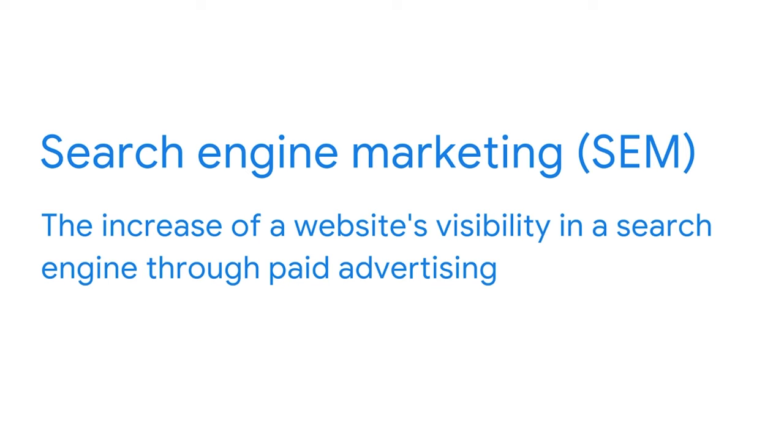You learned about search engine marketing in a previous course, but let's talk about its relationship to your email marketing campaign. SEM is the increase of a website's visibility in a search engine through paid advertising. If you are using Google to search for something, you will see some paid text ads above the organic results — this is an example of search engine marketing. One way to build your list using SEM is to include a discount or incentive in plain text in your ad, enticing those who subscribe immediately. Another way is to use SEM specifically for email marketing lead generation, where a customer browsing sees an ad with a form they can fill out right then and there, resulting in them subscribing to your list.